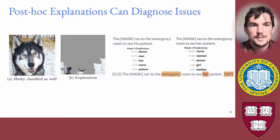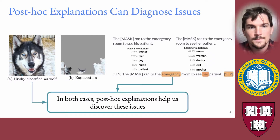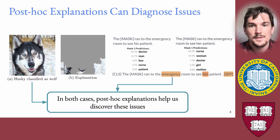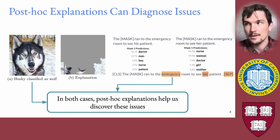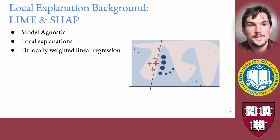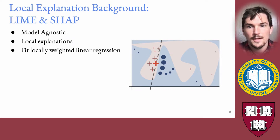In both of these situations we can use post-hoc explanations to help diagnose the key issues. On the left-hand side example, it's a post-hoc explanation — in particular LIME — that tells us the background of the image is being used by the model. Two popular types of post-hoc explanations are called LIME and SHAP. Both fall into the model-agnostic local post-hoc explanation category, and they work by fitting a weighted linear regression using perturbations sampled in the vicinity of a particular data point.